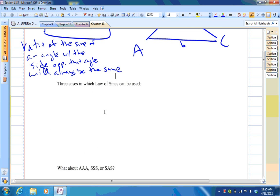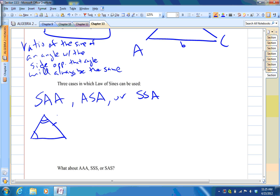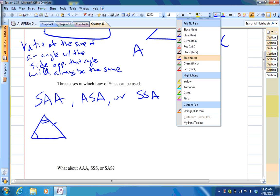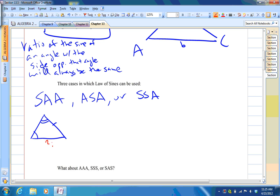There are three cases in which Law of Sines can be used. If you have SAA, ASA, or SSA. So for example, if you have these two angles and this side, then you can use the Law of Sines to get that side. And then of course you can find this angle, because all angles have to add to 180, and then you can use the Law of Sines again to get that side.